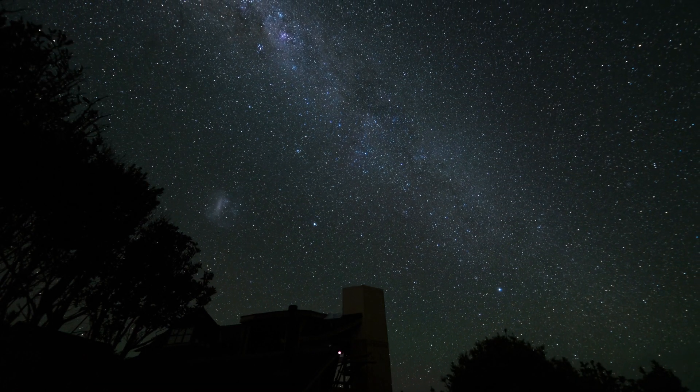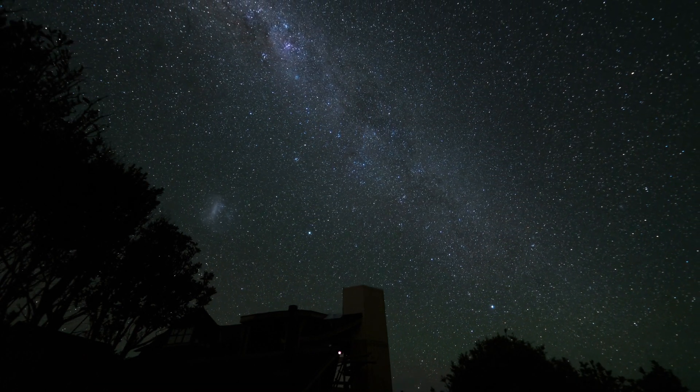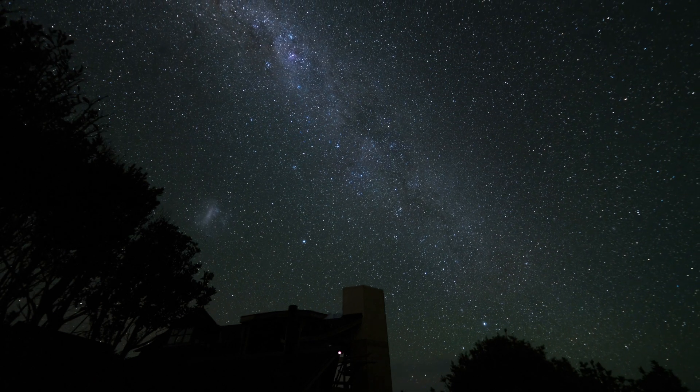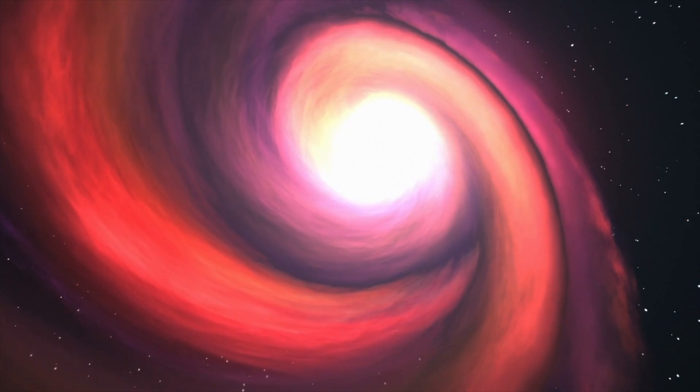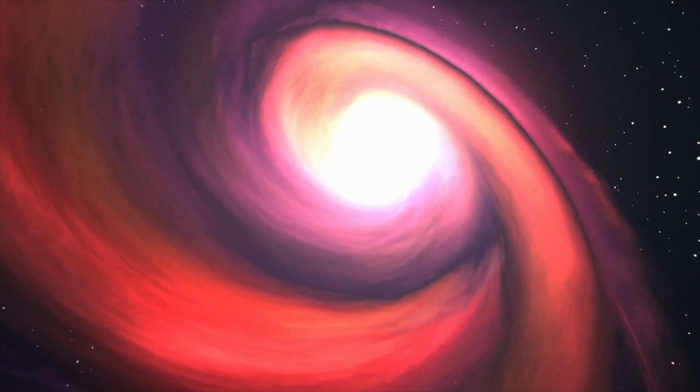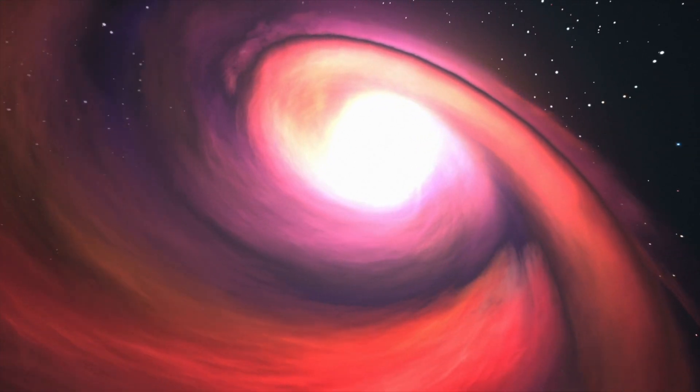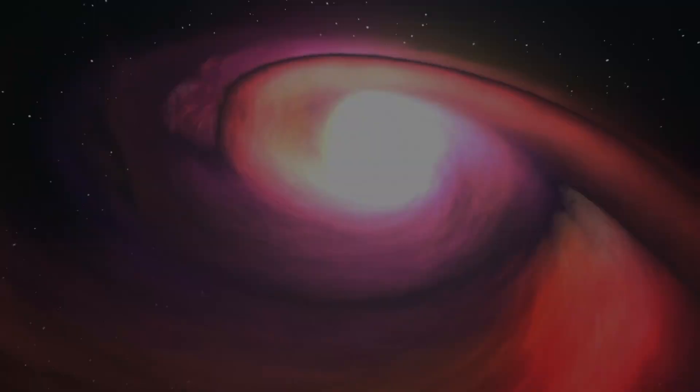This means that any tiny spot we look at in the sky is likely packed with galaxies, and there could be up to 2 trillion galaxies in the observable universe. It also shows what the universe looked like when it was very young, and highlights how active and constantly changing it is.